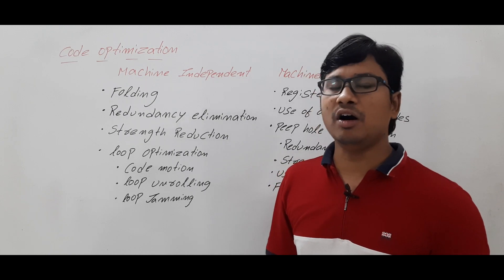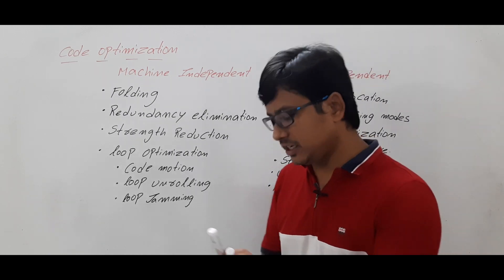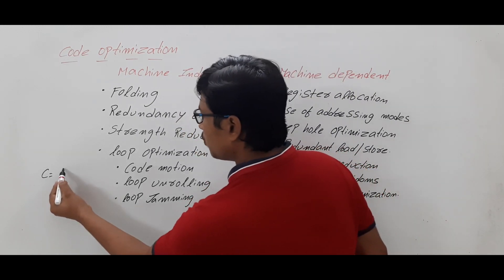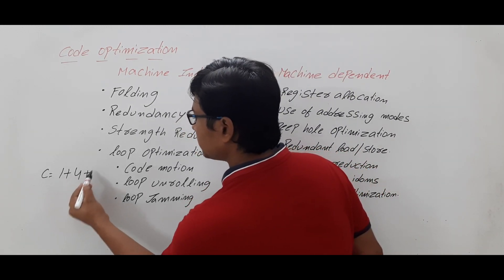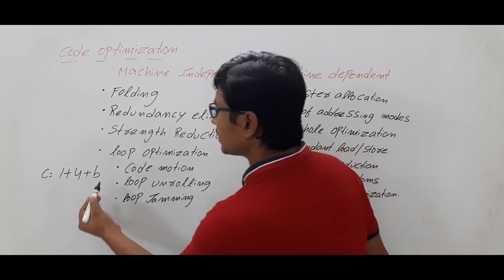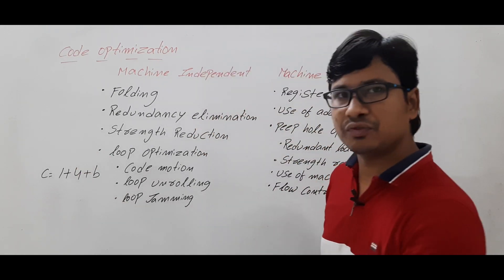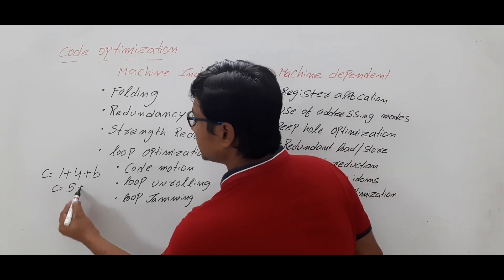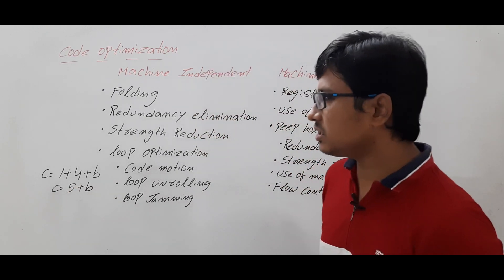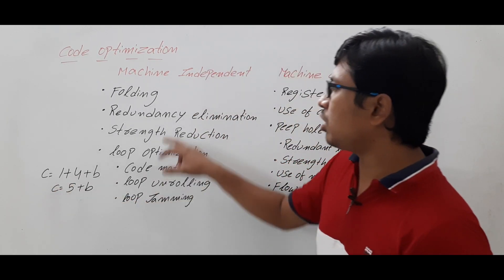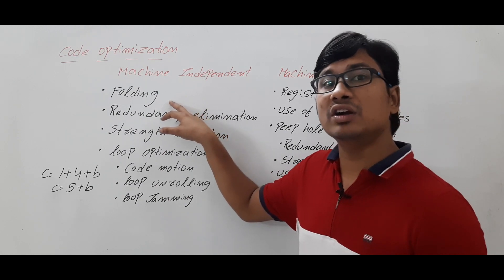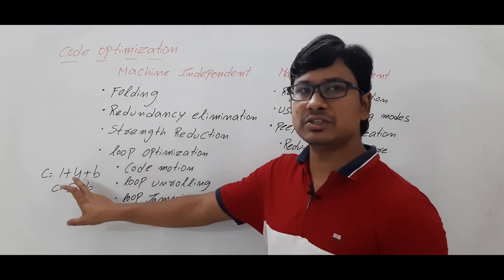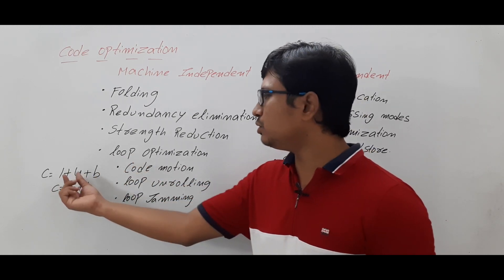Let me discuss about folding or constant propagation. Suppose you have an expression C is equal to 1 plus 4 plus B. Instead of writing 1 plus 4 plus B, you would directly write C is equal to 5 plus B. This kind of code reduction is called folding or constant propagation.